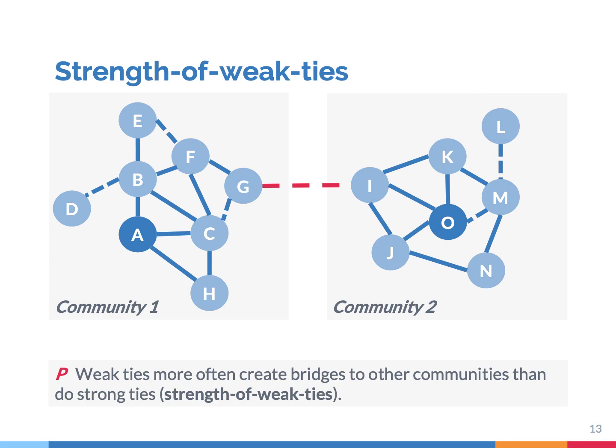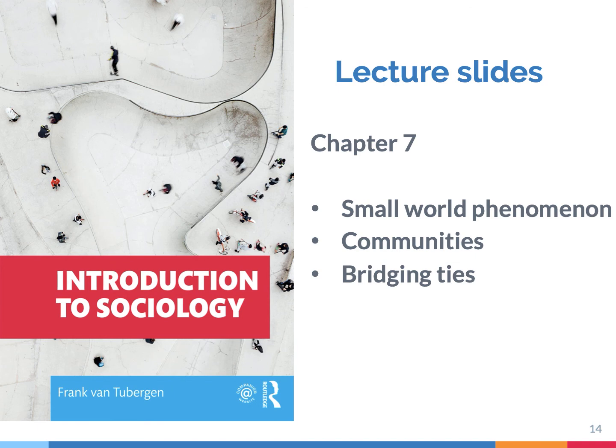Weak ties connect us to people far away, to entirely different communities. In summary, we live in a small world. This means that we are embedded in clustered networks locally — we live in communities — and at the same time, we're also connected to people anywhere in the world because of those community bridging ties. The implication of this small world is that information can spread fast and globally. But also, that 7 billion people can infect you in just a few handshakes.